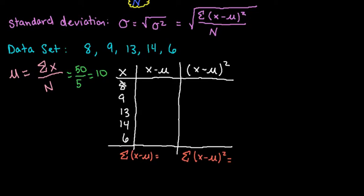What we then do is we take each of our individual values, so in this case we would take 8, and we subtract our mean. We have to be very careful about the sign, so if the value is below the mean, you're going to have a negative. If your value is above the mean, you would have a positive, so this would give us negative 2. Negative 1, 13 minus 10 would give us 3, 14 minus 10 would give us 4, and then 6 minus 10 would give us negative 4.